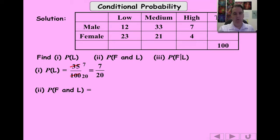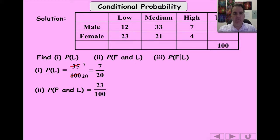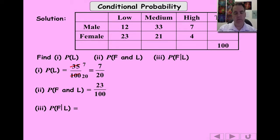What's the probability that the person we choose at random is female and owns a low-rated car? Looking at the table, there are 23 people out of a total of 100, so that's 0.23. Now here's the different one: what's the probability that we choose a female given that we've chosen a person who owns a low-rated car?